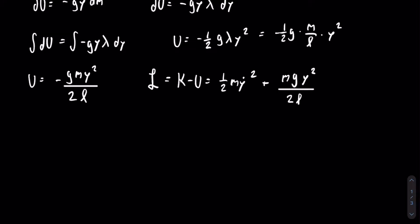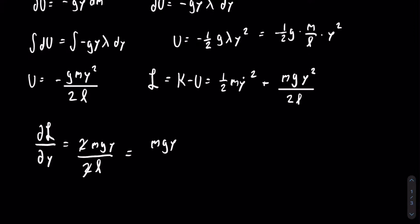Now we can start taking derivatives. The first thing we have to do is find the partial of the Lagrangian with respect to y. There is no y in the first term, so that goes to zero. In the second term we use the power rule, giving 2mgy divided by 2l, and the 2s cancel, so we get mgy over l. The next thing is to find the partial of the Lagrangian with respect to y-dot. There is no y-dot in the second term, so we use the power rule on the first term and get m·y-dot.